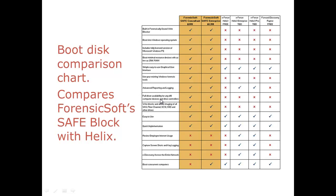Here we are looking at a boot disk comparison chart that compares ForensicsSoft SafeBlock with Helix. As you can see, ForensicsSoft has many checks in all these columns. Compared to the Helix write blocker, there are not as many checks. Where Helix has more checks than SafeBlock is in the columns that include Review Employee Internet Usage, Capture Screen Shots and Key Logging, and eDiscovery across the entire network. These features are not as important as the other information shown. Overall, ForensicsSoft SafeBlock is more useful and a better write blocker than Helix.